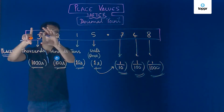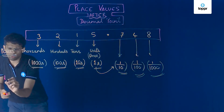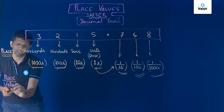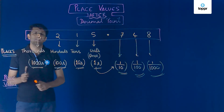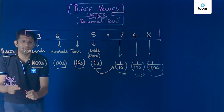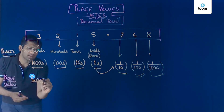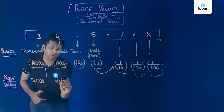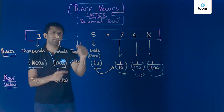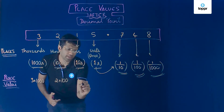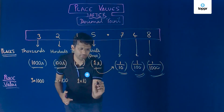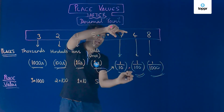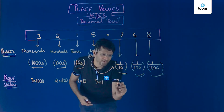Now I am talking about the place value of a digit. We had seen the places of the digits, and now we focus on place value. The digit 3 is at the thousands place, so its place value is 3 × 1000. The digit 2 is at the hundreds place, so its place value is 2 × 100. The digit 1 is at the tens place, so its place value is 1 × 10. The digit 5 is at the units place, so its place value is 5 × 1. The digit 7 is at the 1/10 place, so its place value is 7 × 1/10.